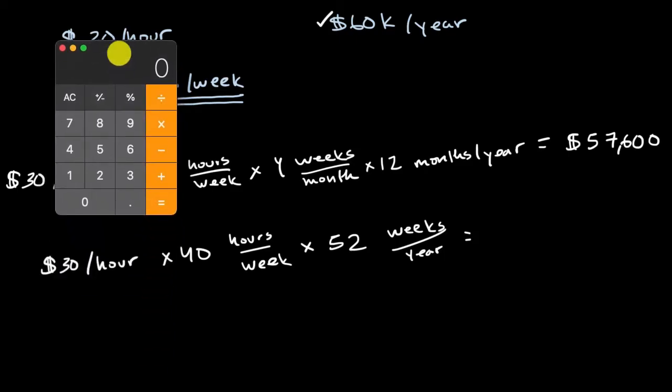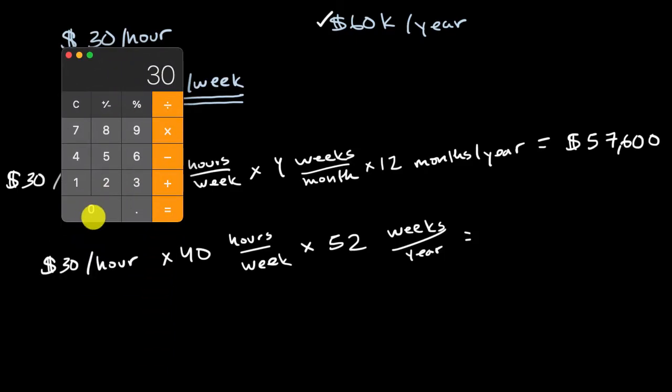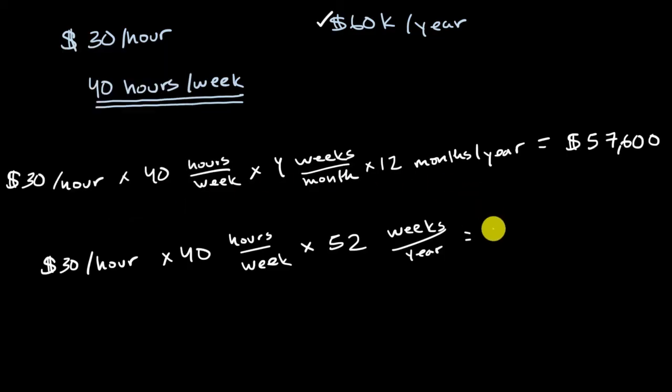So now, let me do it up here, $30 an hour times 40 hours in a week times 52 weeks in a year gets us to $62,400. $62,400, which gives us a very different number. This is almost $5,000 higher than our previous number. And now all of a sudden, it looks like the $30 an hour job is better.